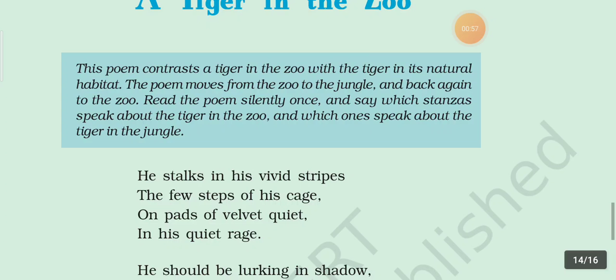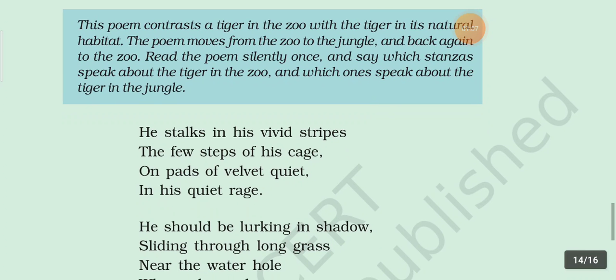Again, 'in his vivid strips' — these words have the S sound, so consonance figure of speech is used here. And in the third line, 'on pads of velvet' — 'pads of velvet' — these words are compared, so metaphor figure of speech is used here.